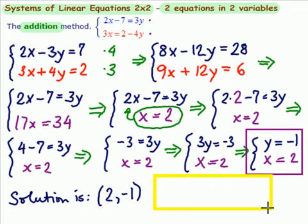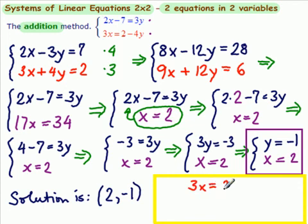Let's check this in the other equation. We used the top equation as we went along, so we're going to check it in this equation. 3x equals 2 minus 4y. So we have 3 times 2 and we're asking whether that is equal to 2 minus 4 times minus 1.